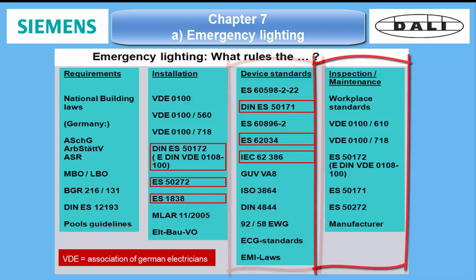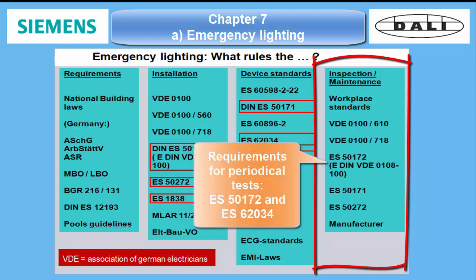The fourth group covers all regulations which deal with inspection and maintenance for such systems. EN 5172, for example, mentions the requirements for the periodical tests, which are described more precisely in EN 62034.